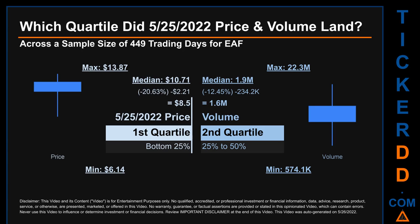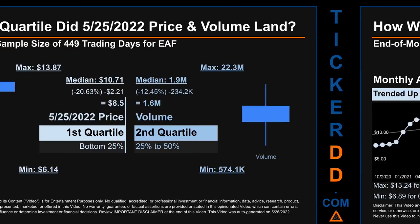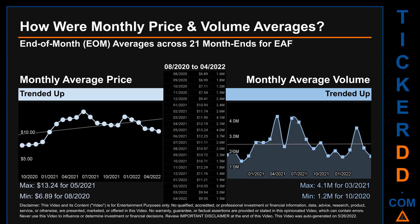The day's volume landed within the second quartile — that is, within the 25 to 50% range of all sampled daily volume — which saw a max daily volume of 22.3 million and a minimum of 574.1 thousand. Quartiles tell us about the spread of a data set by breaking it into quarters, just like how the median breaks the set in half. Descriptively, EAF has a median price of $10.71; therefore May 25, 2022's price was lower from that middle marker by 20.63%. The day's volume of 1.6 million was less than the median by 12.45%.